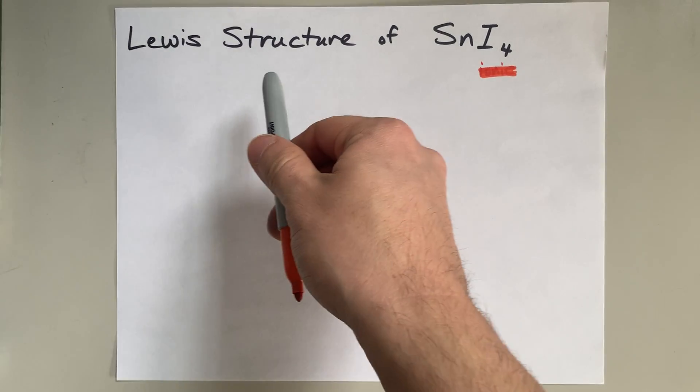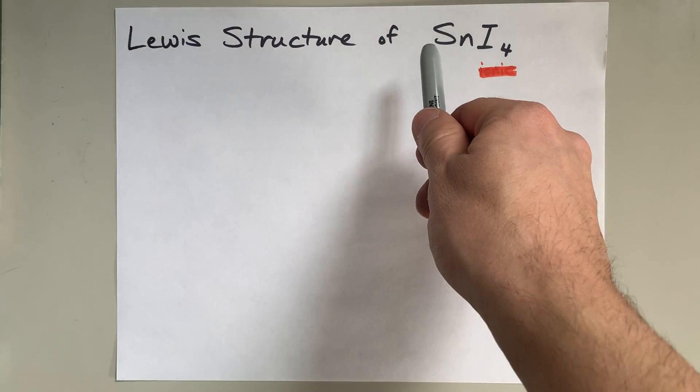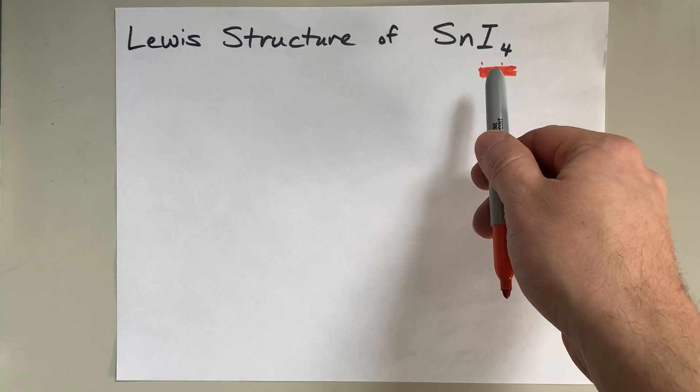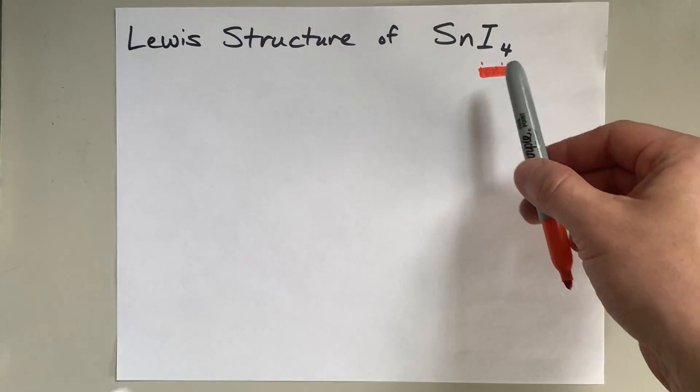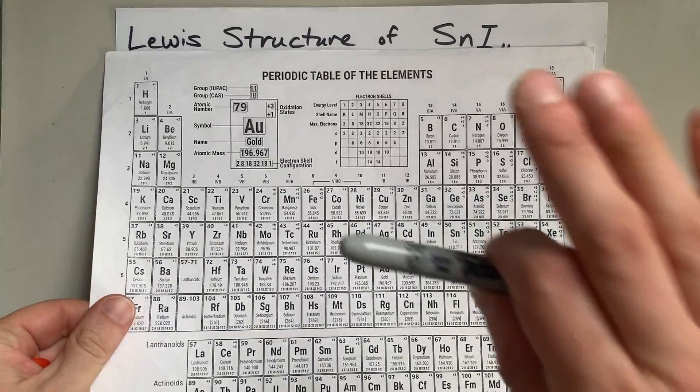We're going to draw the Lewis structure of SnI₄, which is tin-4-iodide.